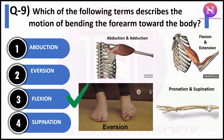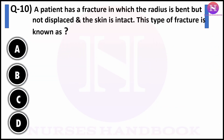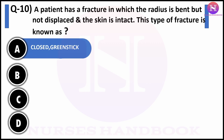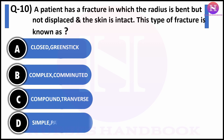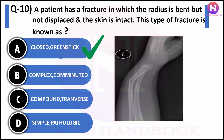Question number ten: a patient has a fracture in which the radius is bent but not displaced, and the skin is intact. This type of fracture is known as — option A: closed greenstick, option B: complex comminuted, option C: compound transverse, option D: simple pathologic. The correct answer is closed greenstick fracture. A greenstick fracture is the fracture of a soft bone in which the bone is bent and breaks but not displaced. As the name indicates, the fracture is similar to how a fresh green stick breaks from the outside when bent. Greenstick fractures are common in infants and children as their bones are soft.